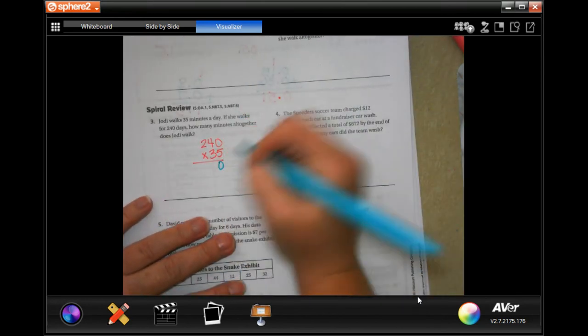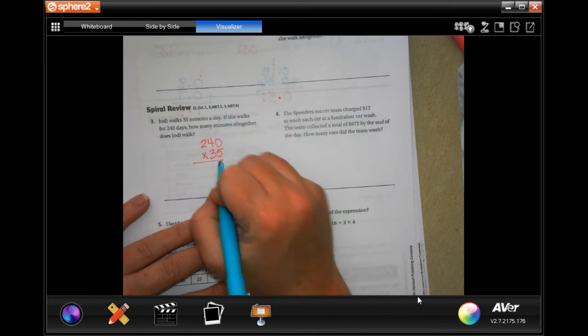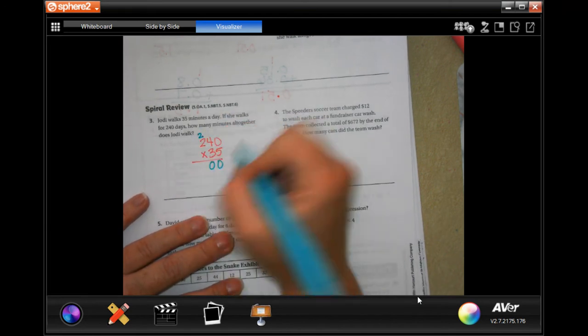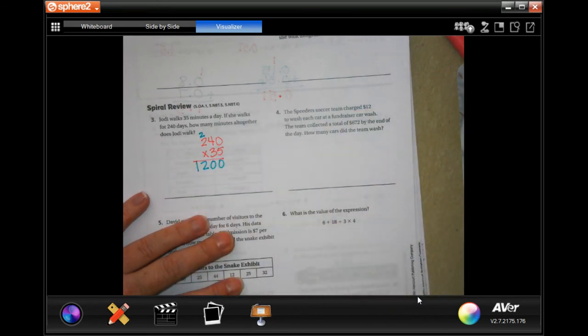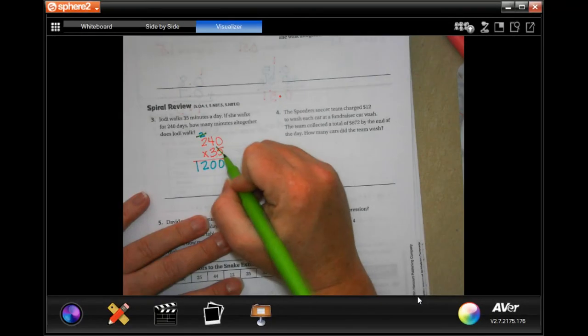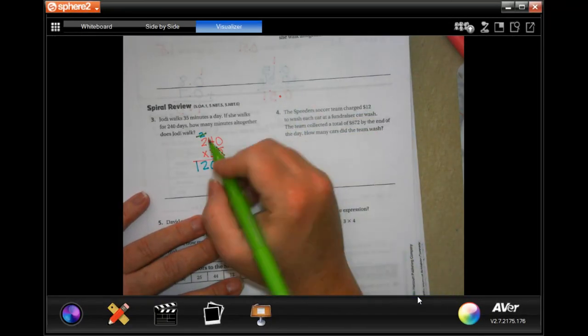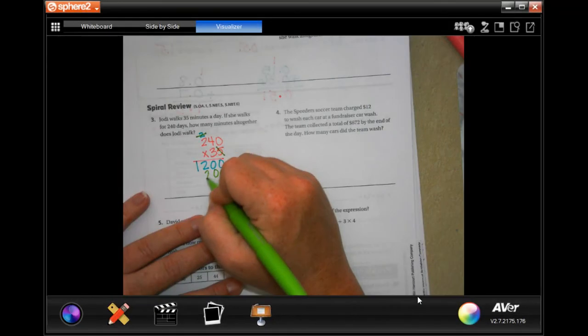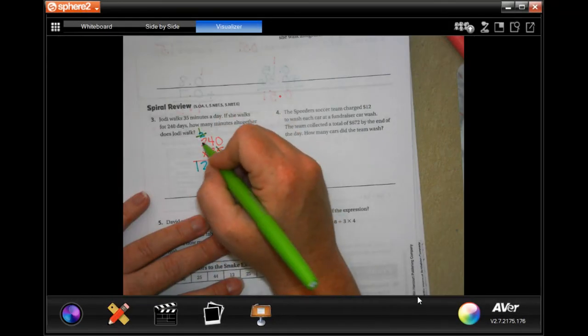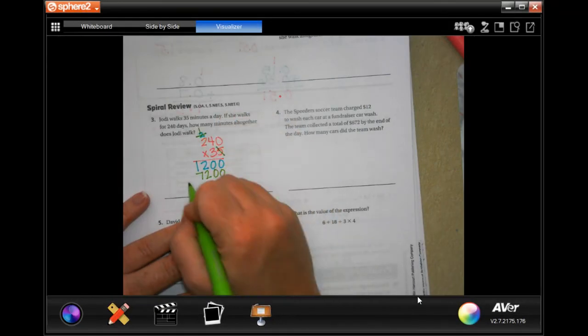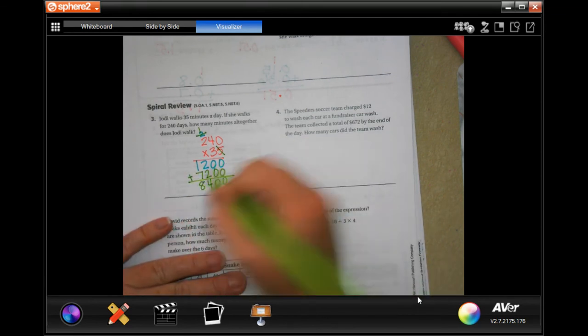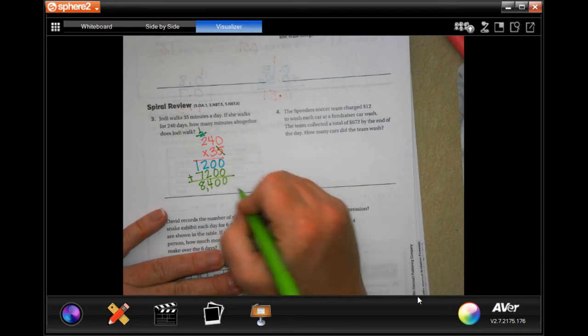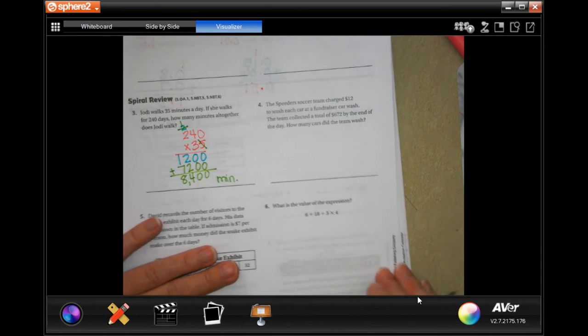Five times zero is zero. Five times four is 20, carry a two. Five times two is ten, plus two more is 12. We're going to go back through and tick tack toe. Three times zero is zero. Three times four is 12, carry a one. Three times two is six, plus one more is seven. Add those up. Zero, zero, four, eight. So 8,400 minutes. Just min with a period.